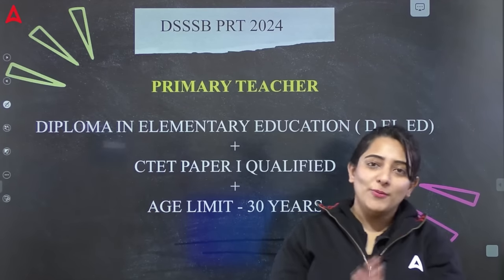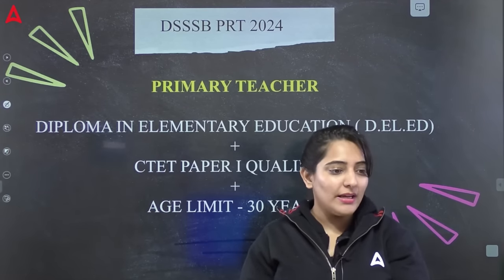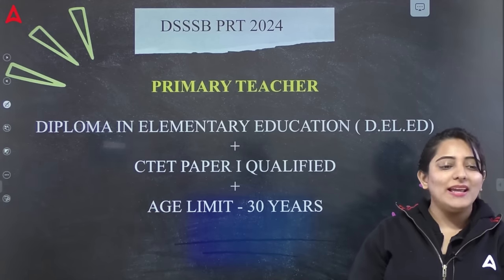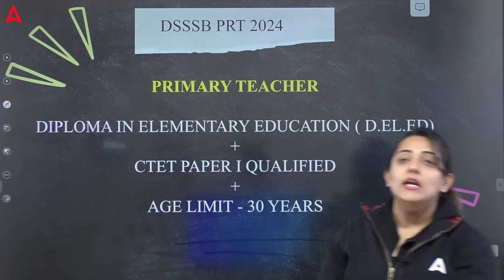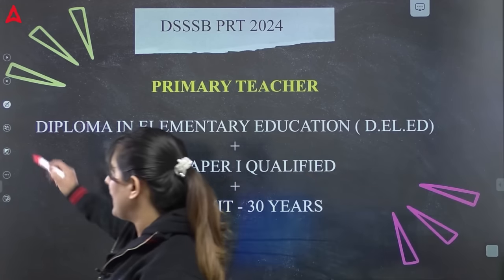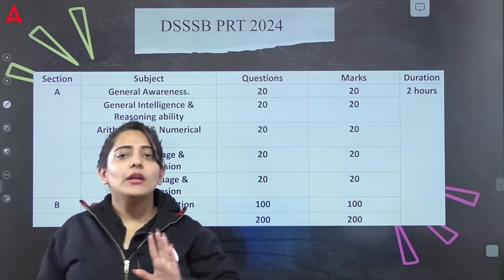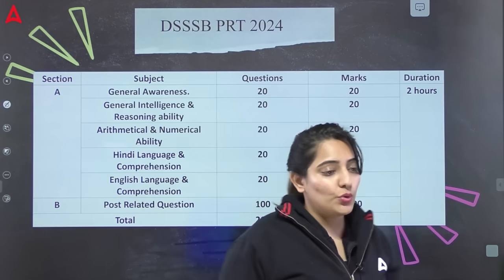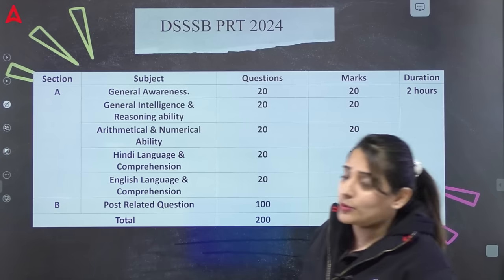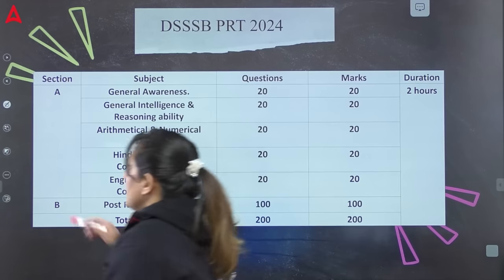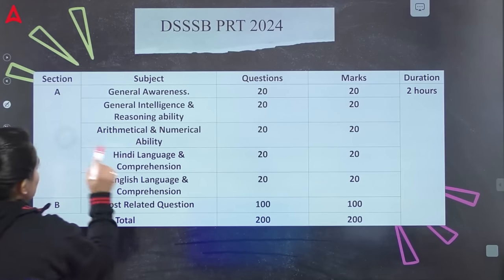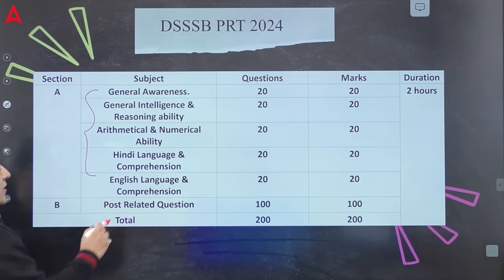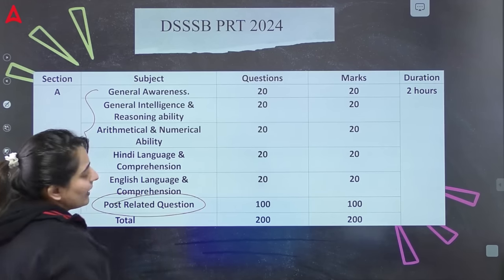अगर PRT post की बात करें तो PRT में Elementary Education में D.El.Ed diploma होना चाहिए, साथ में CTET Paper 1 qualified होना चाहिए। Age limit 30 years है — without relaxation। Exam pattern में Paper 1 बिल्कुल same रहता है: Language, Maths, Reasoning, और GK के subjects मिलाकर 100 marks, और post-related questions 100 number के। Total 200 number का paper होता है।